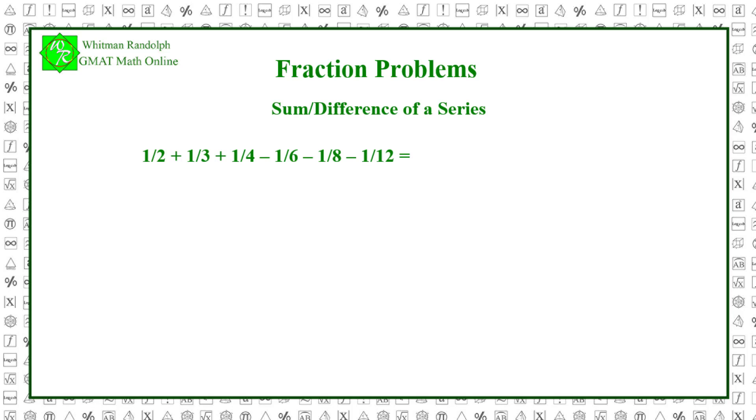Here's a typical example. 1 half plus 1 third plus 1 fourth minus 1 sixth minus 1 eighth minus 1 twelfth equals. And here are some possible answers. Let's find the solution.